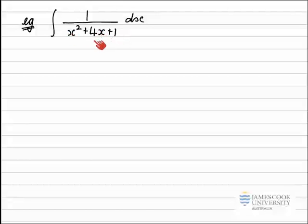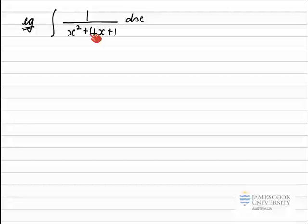I can't think of any factors that multiply to give 1 and add to give 4. So this suggests that I need to complete the squares on the bottom line here for this quadratic, to get it into hopefully a standard integral.